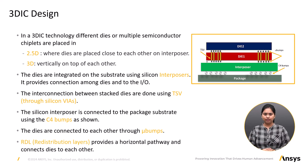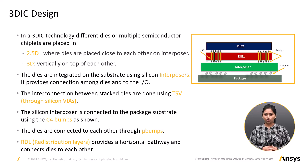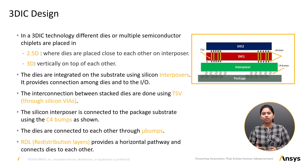Redistribution layers provide a horizontal pathway and connect the dies to each other. Through-silicon via connections reduce the interconnect length and lower the parasitic capacitance, providing better performance and lower power consumption.